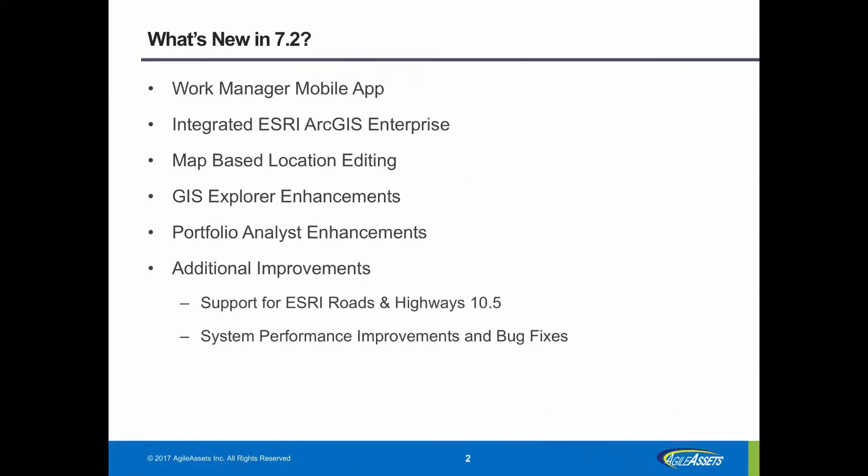Starting with the WorkManager mobile app, the app is a companion to the Agile Assets Maintenance Management System. We've also built in Esri's ArcGIS Enterprise, formerly known as ArcGIS Server. This integration powers the ability to edit the location of features on a map via our maps interface, GIS Explorer. We also made additional enhancements to GIS Explorer, building on the functional and usability improvements introduced with version 7.1.